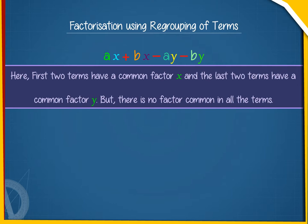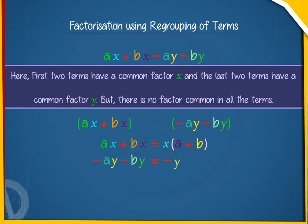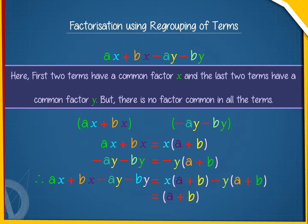We will factorize ax plus bx, and then minus ay minus by. ax plus bx equals x into a plus b, and minus ay minus by equals minus y into a plus b. Therefore, ax plus bx minus ay minus by equals x into a plus b, minus y into a plus b, which equals a plus b into x minus y. Here, a plus b is a common factor in the two terms.